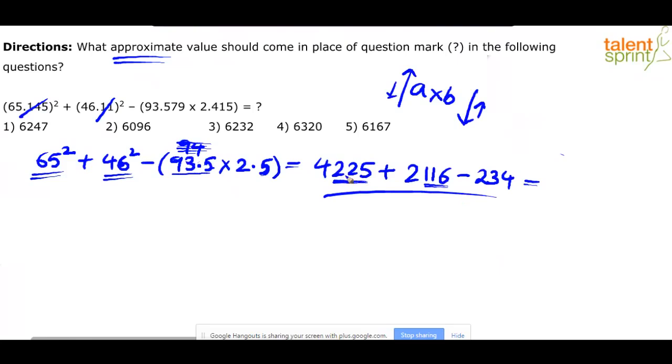Are you able to follow? 225 minus 116. Forget about the thousands. Anyway, 4,000 plus 2,000 will give you 6,000. Now work on the hundreds. 225 and 116 is 341. 341 minus 234. So 300 minus 200 is 100.